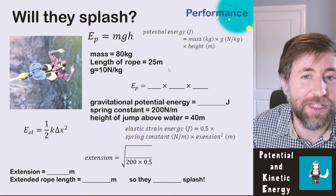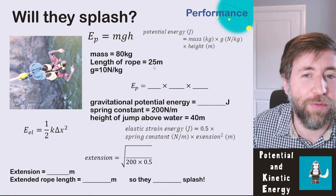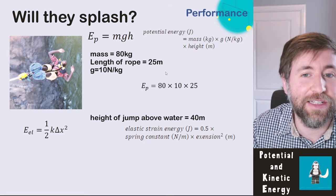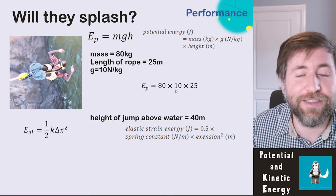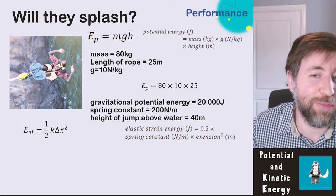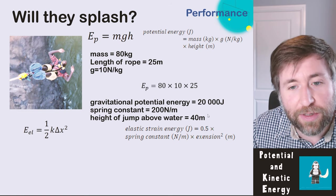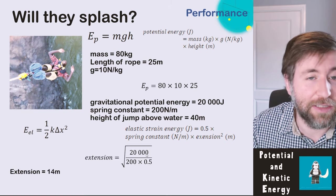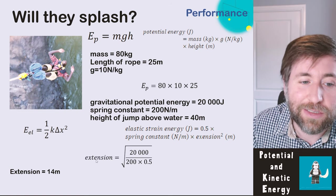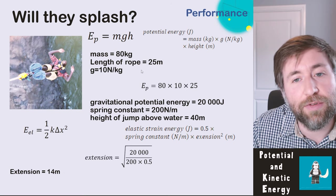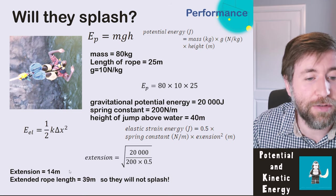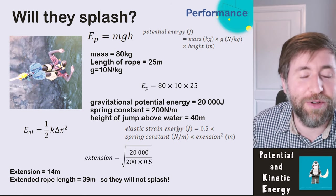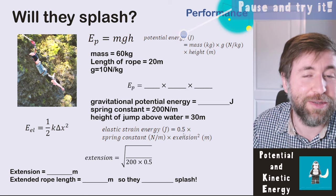These calculations are complicated because of different heights — the rope length and the height above water. Use the rope length for the initial GPE calculation: GPE = 80 × 10 × 25 = 20,000 joules. Then substituting into the elastic PE equation and rearranging gives extension = √(20,000 ÷ (200 × 0.5)) = 14 meters. Total extended rope = 25 + 14 = 39 meters, and the bridge is 40 meters above water, so the jumper is safe.